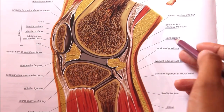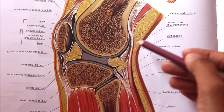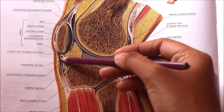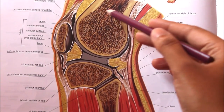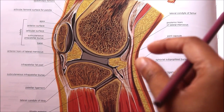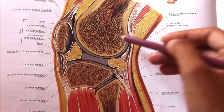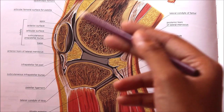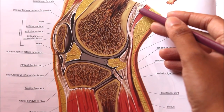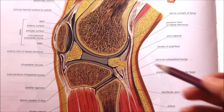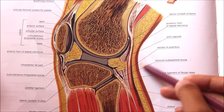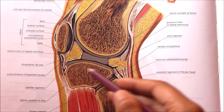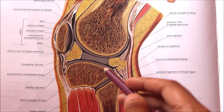The fibrous capsule is very thin and is deficient anteriorly, where it is replaced by the quadriceps femoris, the patella, and the ligamentum patellae. Regarding the femoral attachment of the fibrous capsule, it is attached about half to one centimeter beyond the articular margin. The attachment has three special features: anteriorly it is deficient, posteriorly it is attached to the intercondylar line, and laterally it encloses the origin of the popliteus muscle.